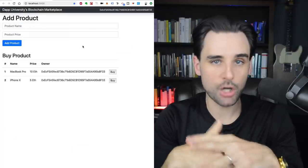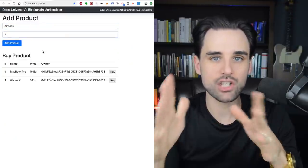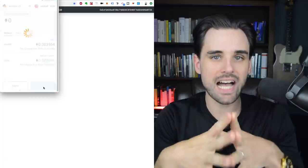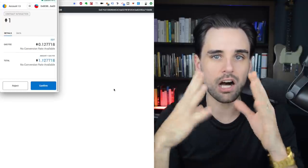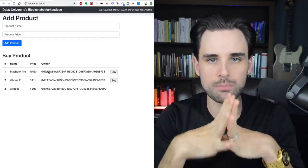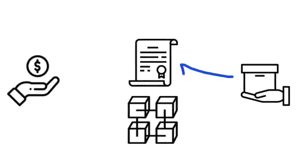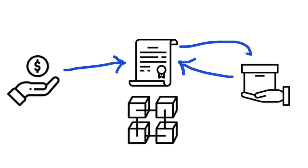Let's look at the application we're going to build. This is a marketplace application that runs on the blockchain, kind of like Craigslist. It allows people to list items for sale, and it allows other people to purchase those items with cryptocurrency. Whenever somebody purchases an item, they instantly become the owner. That's because the application is powered by a smart contract on the blockchain which manages the marketplace, tracks who owns the item, and transfers ownership automatically anytime someone purchases it with cryptocurrency.